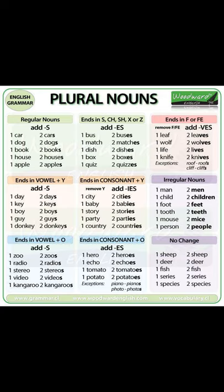If the singular noun ends in -s, -ss, -sh, -ch, -x, or -z, add -es to the end to make it plural. Examples: bus → buses, wish → wishes, lunch → lunches, tax → taxes. In some cases, singular nouns ending in -s or -z require that you double the -s or -z prior to adding the -es for pluralization.